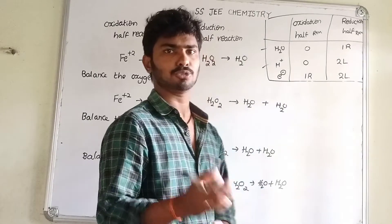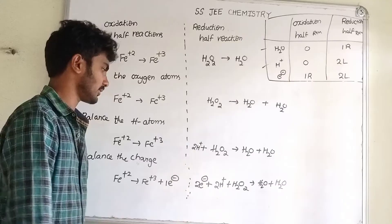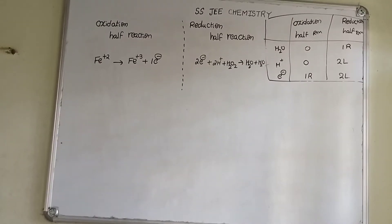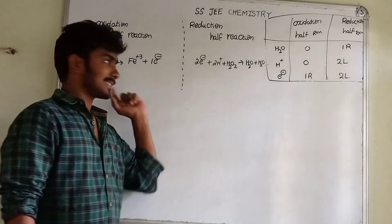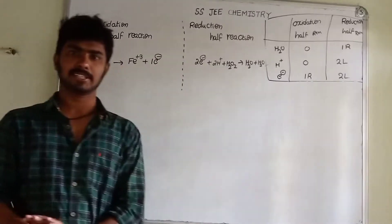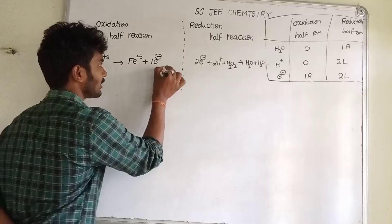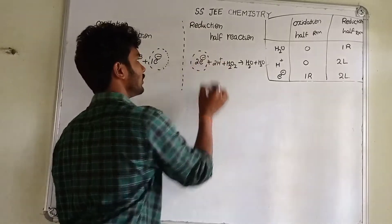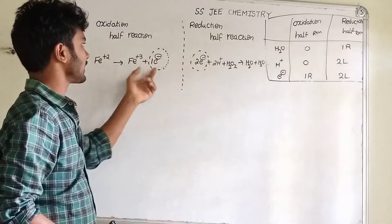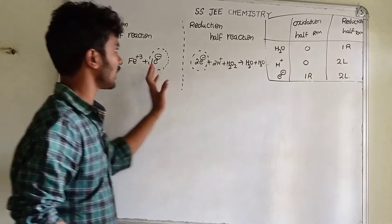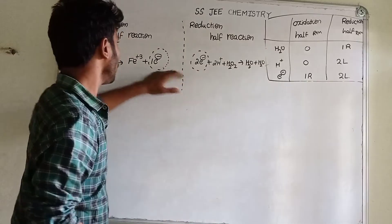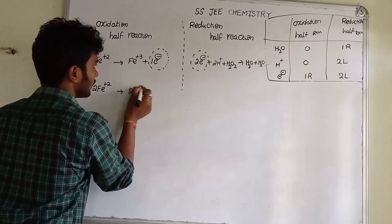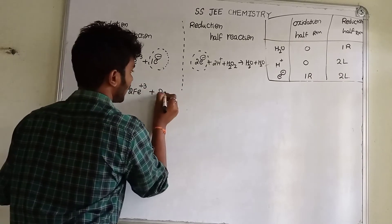There are two multiplications — two and three are multiplied. We'll round up the electrons: 1 electron includes two electrons, so multiply by 2. 2 equals 2. We'll multiply this equation: 2 into Fe²⁺ gives 2Fe³⁺ plus 2 into 1 electron equals 2 electrons.